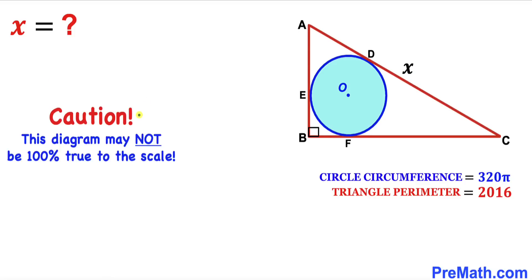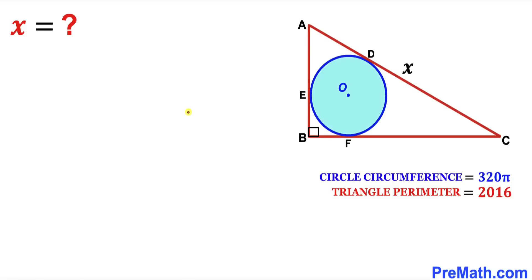Note that this figure may not be 100% true to scale. Let's get started. Here's our first step — let me label the radius of this blue circle as lowercase r, and we are going to calculate the value of this radius r. We have been given that the circumference of the blue circle is 320π.